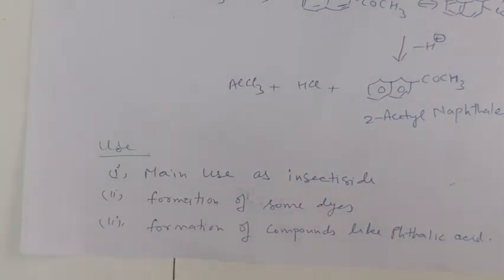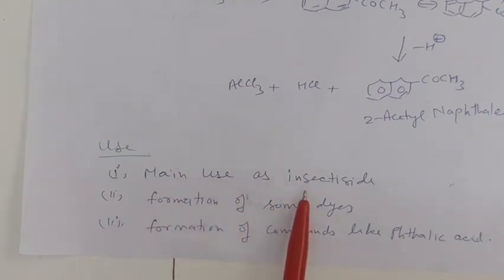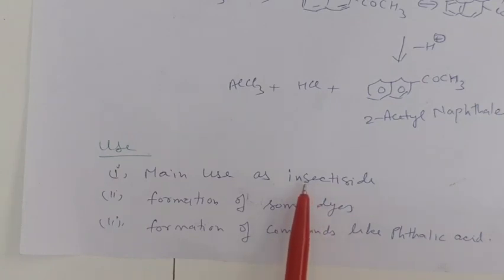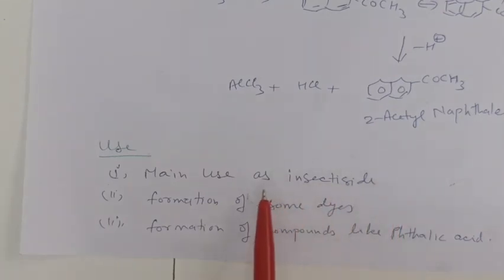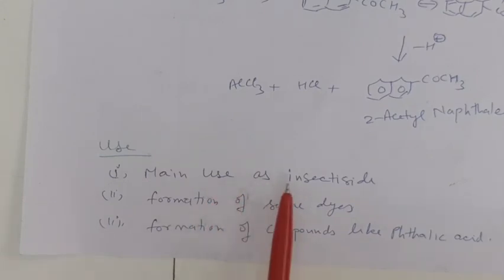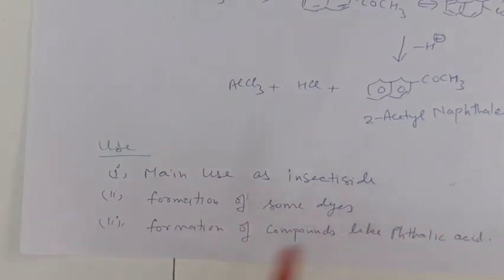The main use of naphthalene is as an insecticide. We commonly use naphthalene in our homes to protect clothes, and naphthalene balls are placed in sinks and wash basins to keep insects away. Naphthalene is also used in the formation of dyes and compounds like phthalic acid and phthalic anhydride. This concludes the lecture on naphthalene. Thank you.